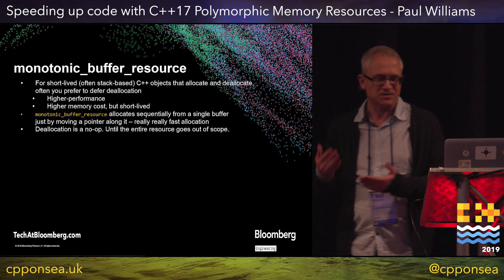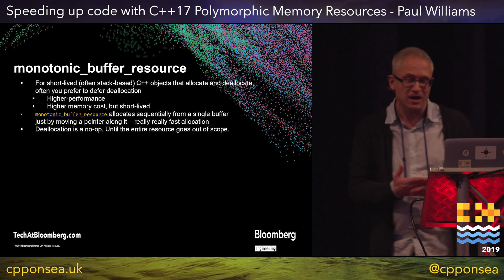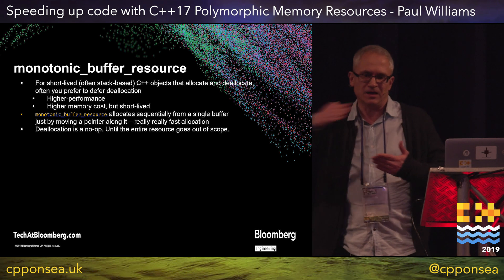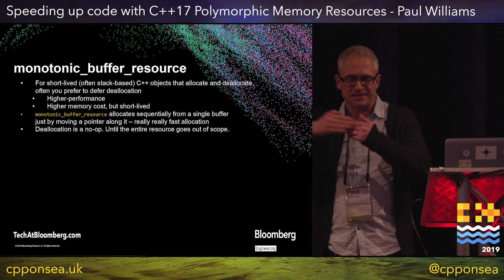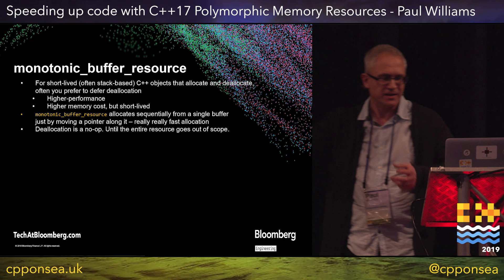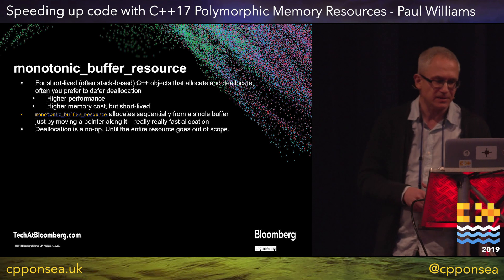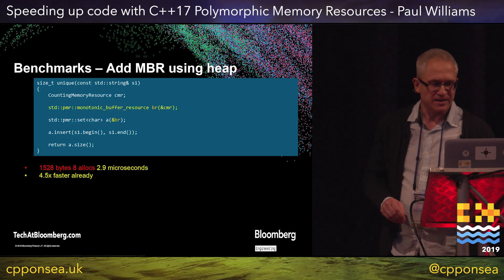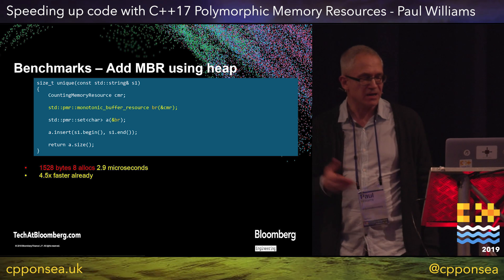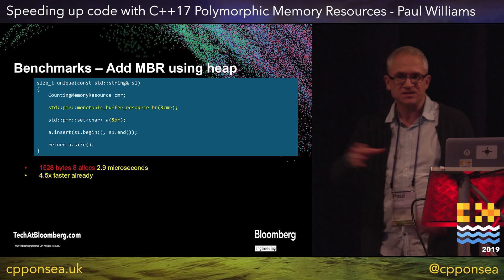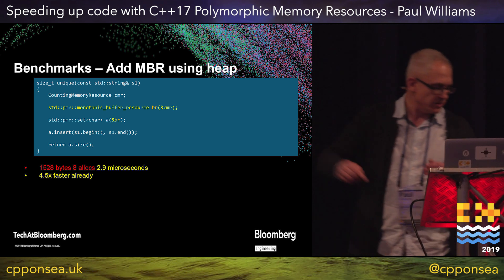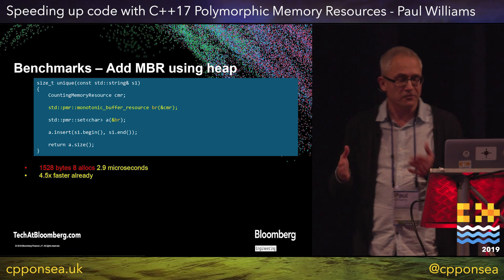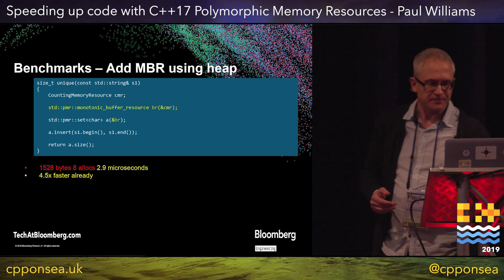How about if I actually use a special kind of allocator that allocates from a longer fixed buffer, and when you deallocate, it does absolutely nothing until you throw the whole thing away? C++17 has that as a monotonic buffer resource. Let's plug it in. We now get more memory usage because we're not throwing away as we go, but only eight allocations — 2.9 microseconds. Four and a half times faster already.